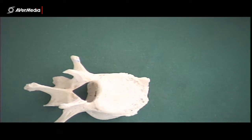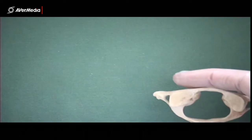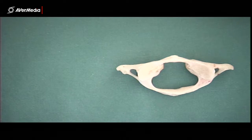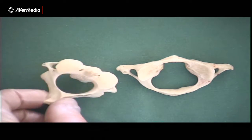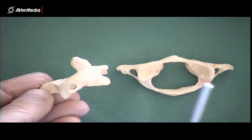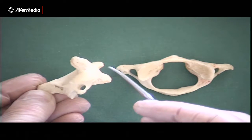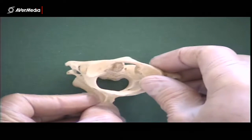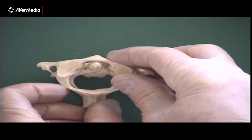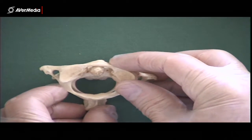Now there's a couple of quite specialized vertebrae that you do need to be able to identify, but fortunately only two. And here they are. Here we've got C1 with no body, and here we have C2, which not only has a body, but also has this part that protrudes superiorly from the body called the dens.